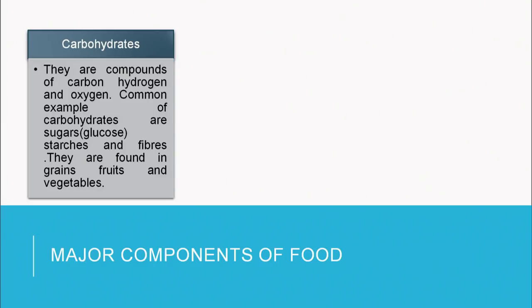Carbohydrates, as well as fats and proteins, are all organic compounds. Carbohydrates are compounds of hydrogen, oxygen and nitrogen. The most common carbohydrate is glucose, or the sugars that we take — starches, fiber — and they are found in grains, fruits and vegetables. Most of the foods that we or any organism eat contain carbohydrates.